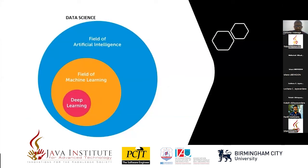We discussed how these things are organized. The outermost area is data science. A subset of data science is artificial intelligence, machine learning is another subset, and deep learning is another subset. These are all interconnected and this is how they are organized.